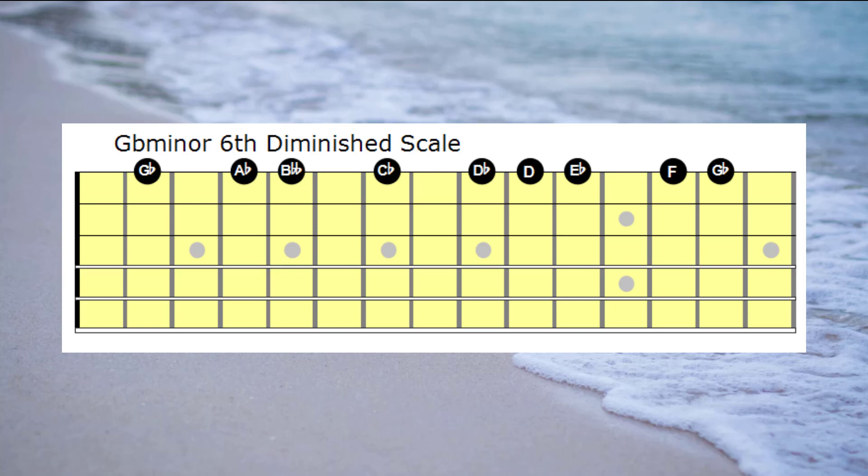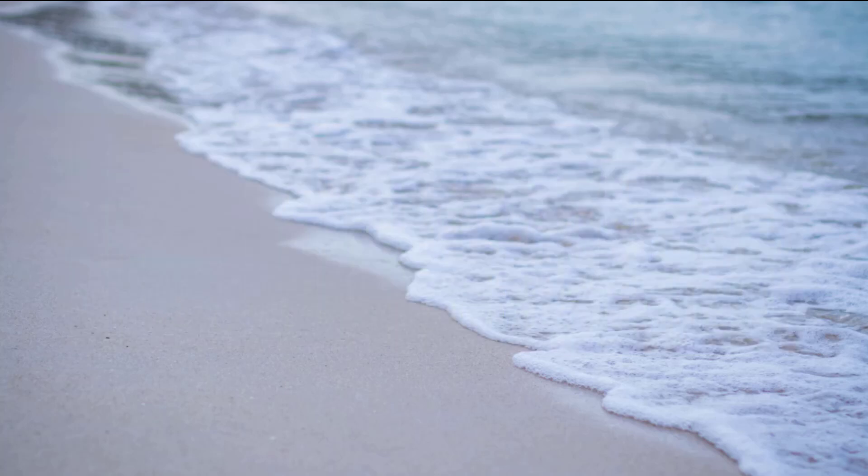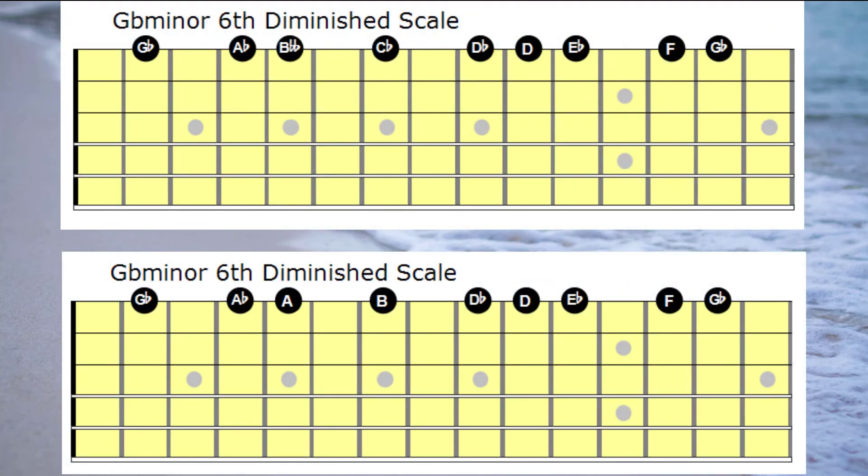Now there's a couple of notes in there that may be new to you. B double flat could also be referred to as A. C flat could be referred to as the note B. So let's practice that scale on the first string.